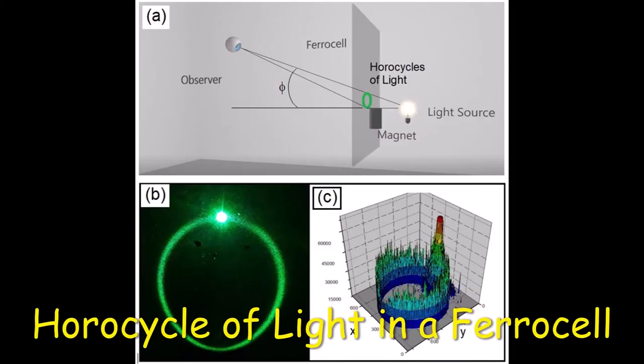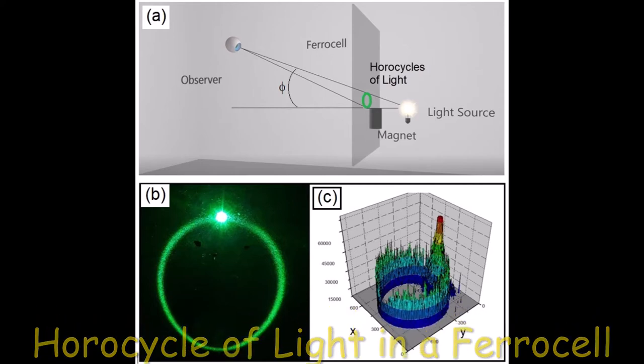Horocycle of light in a ferrocell. We can observe the formation of a horocycle and how it changes as the angle of observation changes.